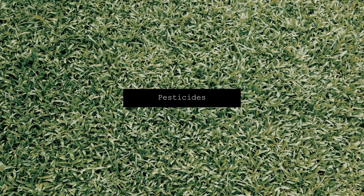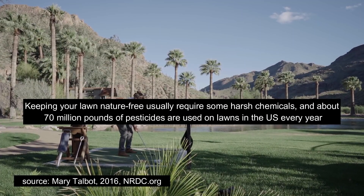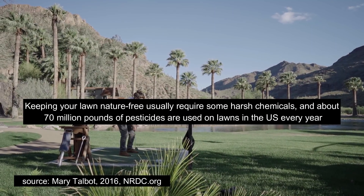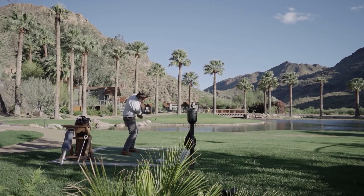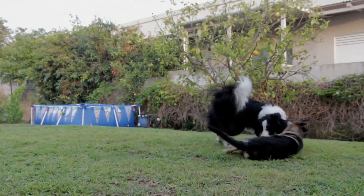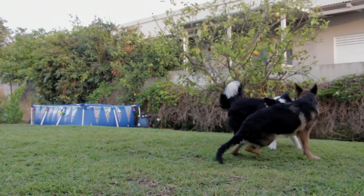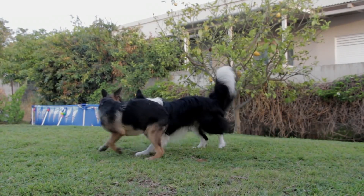Keeping your lawn nature-free also requires some harsh chemicals. About 70 million pounds of pesticides are used on lawns in the US every year. Using both synthetic fertilizers, pesticides, and herbicides comes with some dire consequences for biodiversity, aquatic environments, as well as for water and soil quality — all for a green lawn.